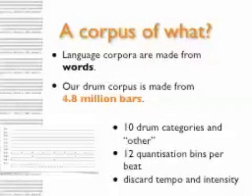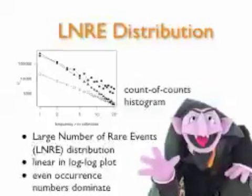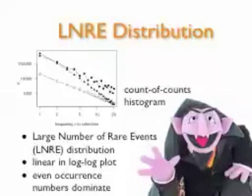What will natural language processing people do with a corpus of words? They will count them, and that's exactly what we do with our collection of bars. Here on the upper left you see a count-of-counts histogram. The x-axis shows the frequency r in the collection — how often a pattern appears — and the y-axis shows the corresponding number of patterns. Patterns that appear exactly once form a very large number, and patterns appearing exactly twice are far fewer. The drum pattern corpus is quite linear in a log-log plot, similar to language, which relates to Zipf's law.